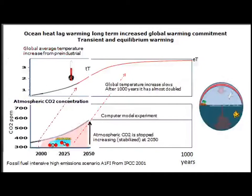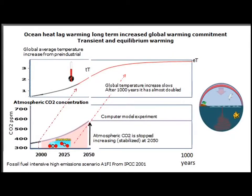This is the next part of the ocean heat lag commitment — a commitment far into the future, a commitment to a much greater degree of global warming than we're experiencing today, and it lasts for an extremely long time. The commitment is to a warming very much greater than today's warming, causing extraordinary unprecedented disasters on every continent. This introduces the scientific terms transient and equilibrium warming.